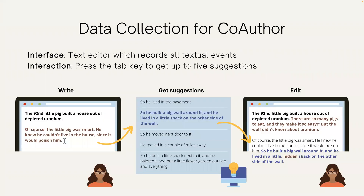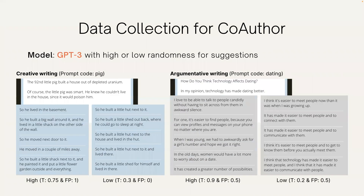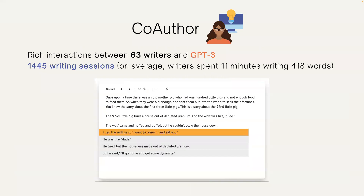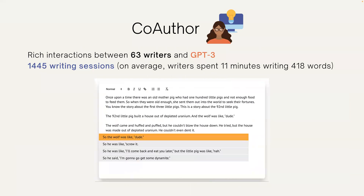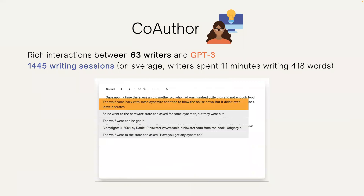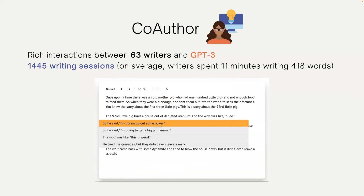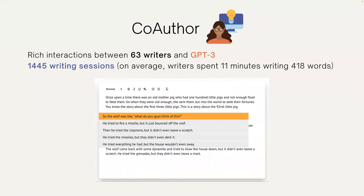For data collection, we used a text editor where writers can press the tab key at any time to get suggestions. For the language model, we used GPT-3 with either high or low randomness. Here are example suggestions from GPT-3 under different randomness settings. As a result, we collected rich, replayable interactions between 63 writers and GPT-3 in around 1,500 writing sessions.